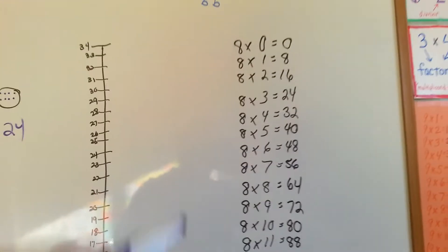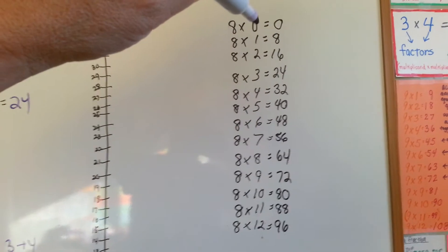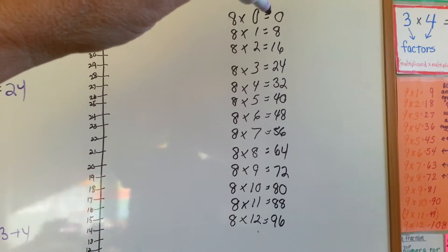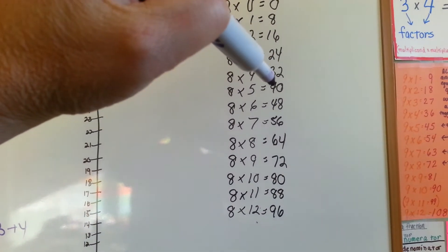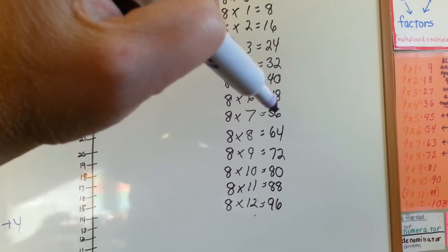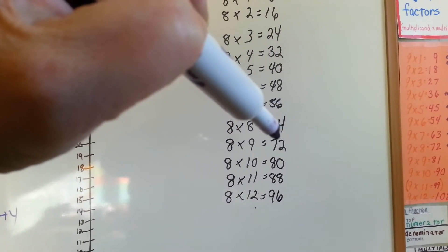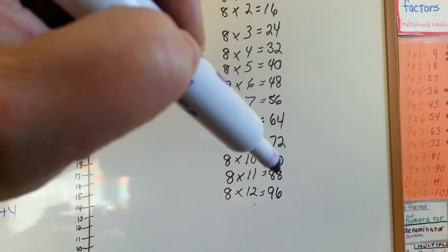So let's look at the eight times table, starting with zero, of course. The answers are zero, eight, sixteen, twenty-four, thirty-two, forty, forty-eight, fifty-six, sixty-four, seventy-two, eighty, eighty-eight, and ninety-six.